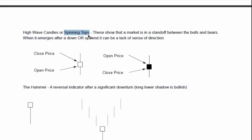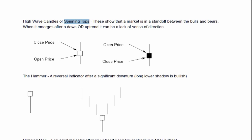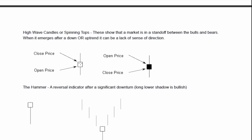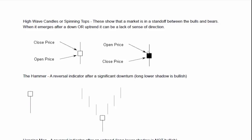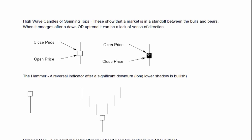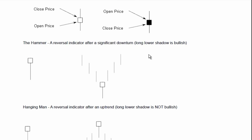Spinning tops — I refer to them as spinning tops rather than high wave candles. These, kind of like a doji, are showing a standoff between bulls and bears. They can emerge in a downtrend or uptrend and really just give a lack of overall direction, similar to a doji, with the open and close pretty much the same. You just have a little bit of a body. So if you notice the doji has no body, here you have a bit of a body, but the tails are there showing indecisiveness, depending on where it's coming from.